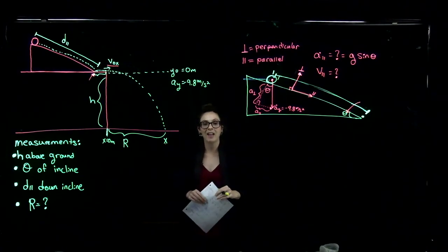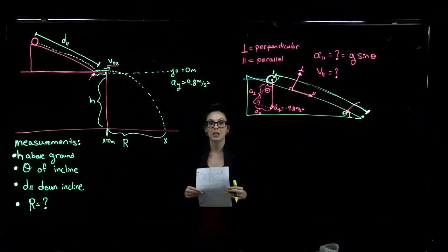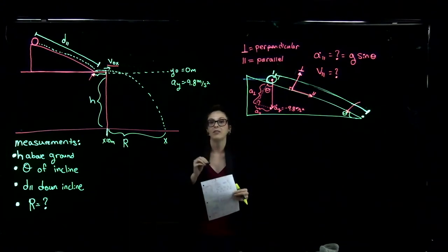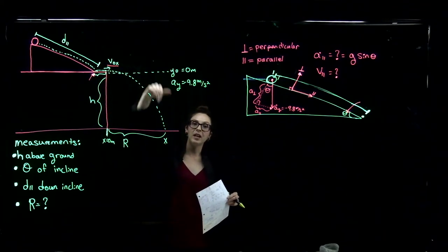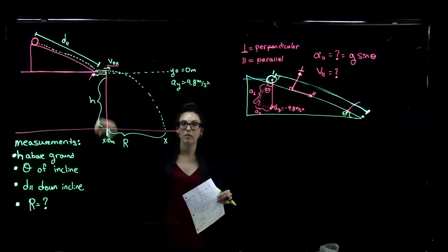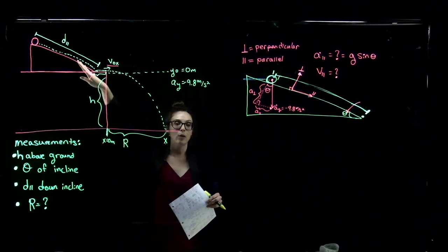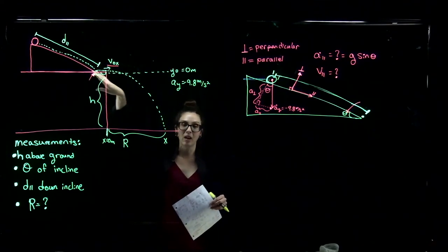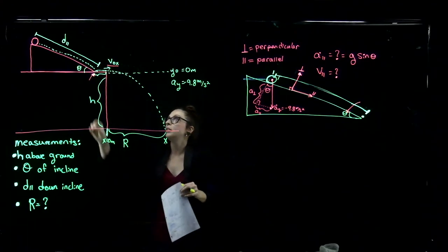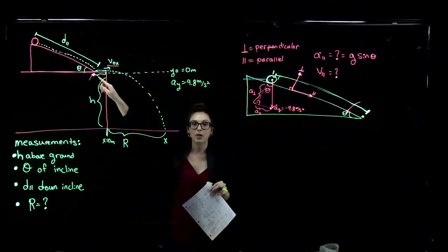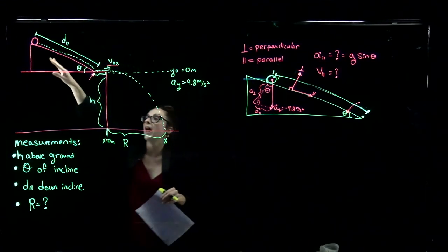You are going to replicate Galileo's experiment. The only pieces of information we're going to know in advance are: the height at which our ball rolls off the table toward the ground, the angle of the incline, and you're going to take a piece of cardboard and use that for the incline plane. You'll also know the distance that your object is rolling down that piece of cardboard, which will be your incline plane.